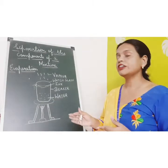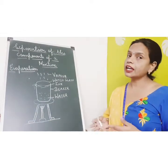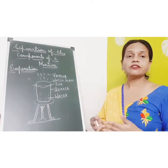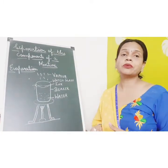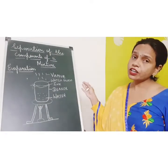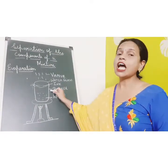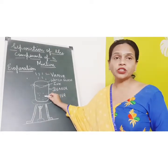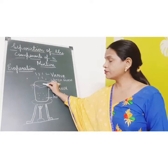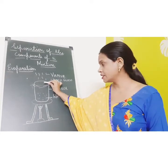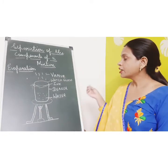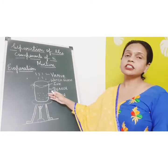Now we come to evaporation, which is again a method to separate a solid from a liquid. We use this method to separate dye from ink. The arrangement involves a beaker filled with water, a watch glass in which ink is kept, and a burner to provide heat.